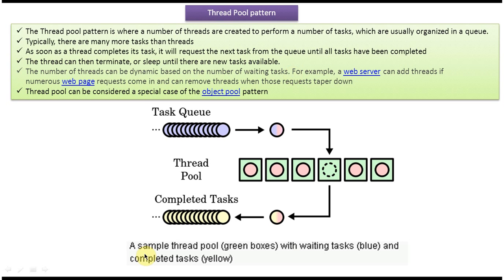Here you can see a sample ThreadPool shown as green boxes. This is ThreadPool which contains Threads. The Thread is responsible for performing the task. It will take a task from the Task Queue and perform it.